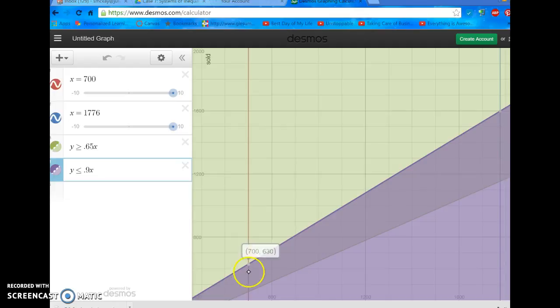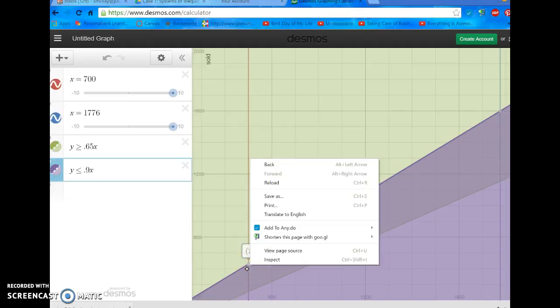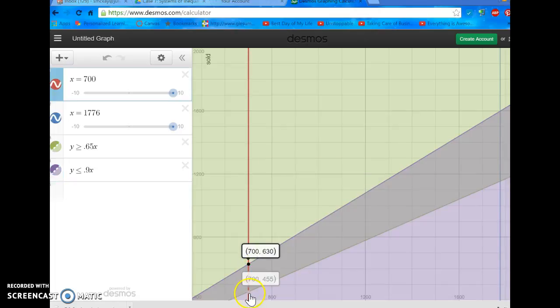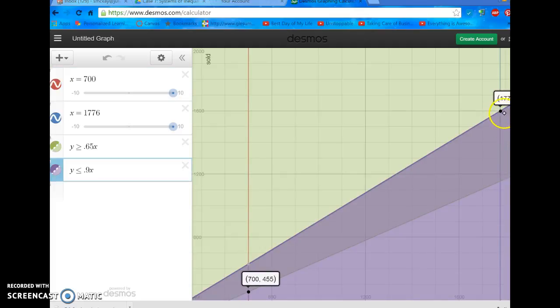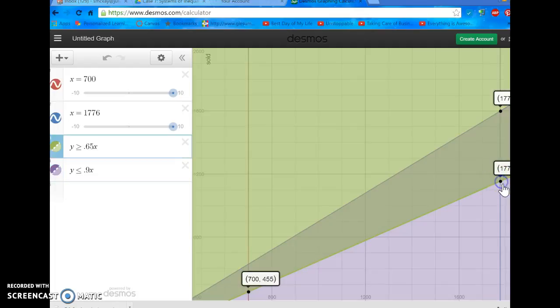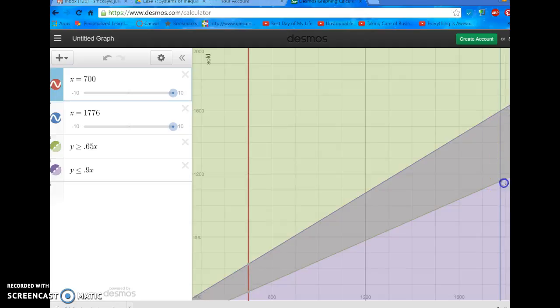And what we want to look at is this area, this slice from here, from this point right here, 1,700, 530, to this point right here, 1,700, 455, to this point right here, 1,776, 1,598, and this point right here. Well, not quite there, let's do this one right there. There we go. So that's the area that we're looking at from here, to here, to here, to here, alright? So now take a minute and graph this on your paper. So copy what we've done here and graph it on your paper.